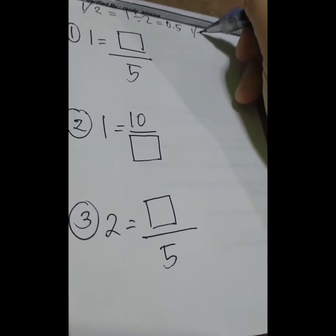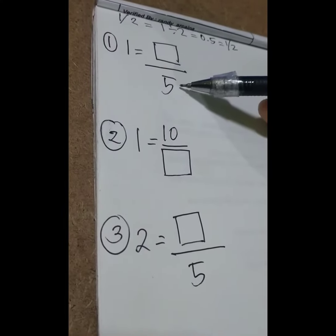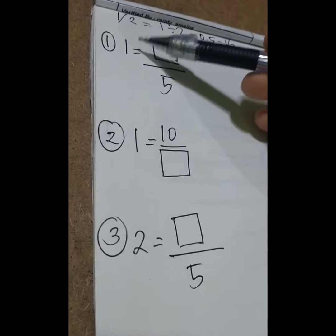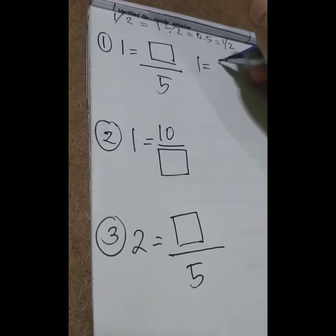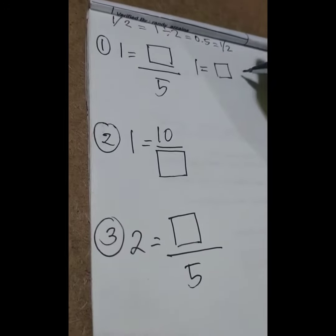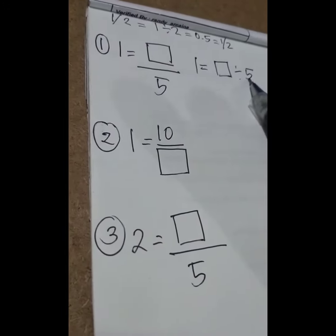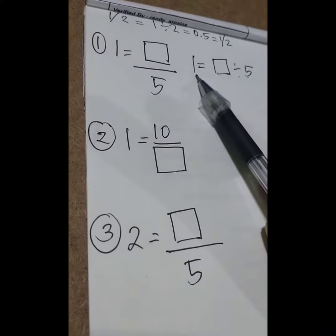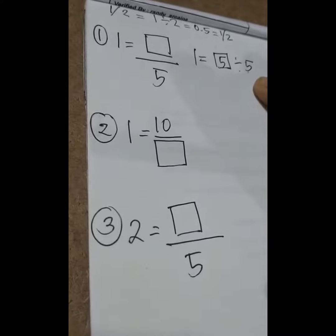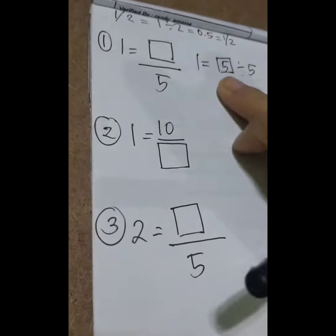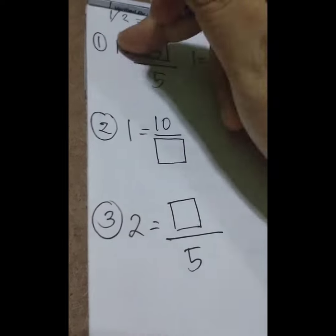So ganito yung gagawin mo rin dito. Ano ang number na i-divide mo ng five, ang answer mo one? Parang ganito: One is equals to what number divided by five? Five divided by one, five. Five divided by five, one. One times five, five. So, five. Five divided by five, one.